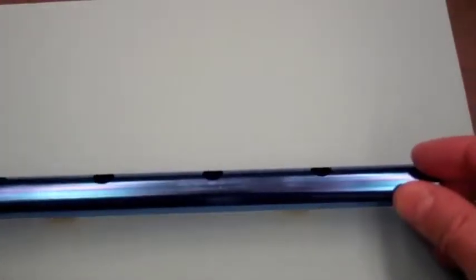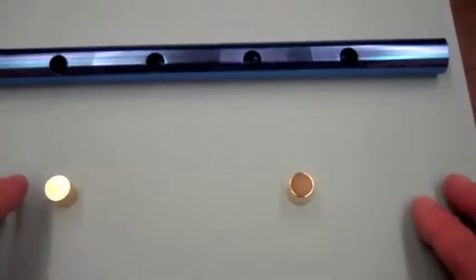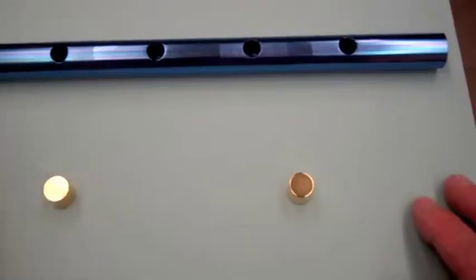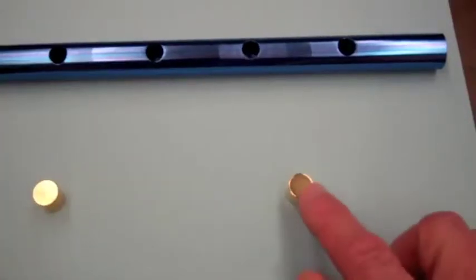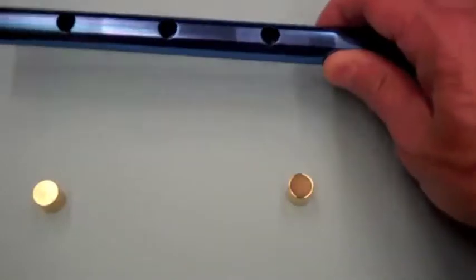So what we're going to do is drop these two slugs through. We'll see the non-magnetic one falls rapidly, whereas the magnetic one falls slowly because of the eddy currents that are going to be induced in the aluminum as the magnet falls.